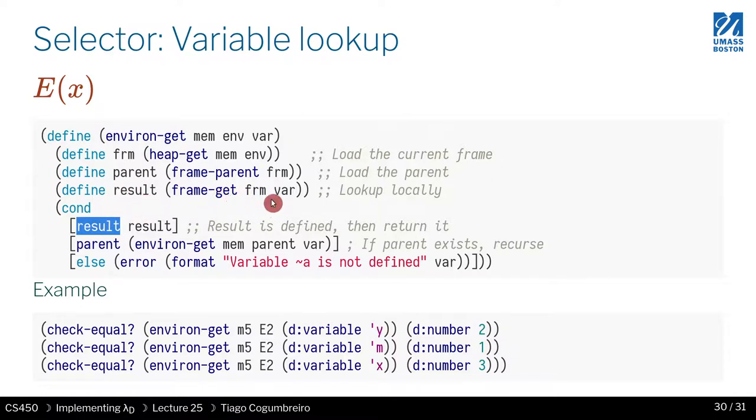A get may fail and returns false if it fails. We check if the result is defined, so if the variable is defined in the frame frm. If that's the case, you return the result. Otherwise, you check if the parent is defined.